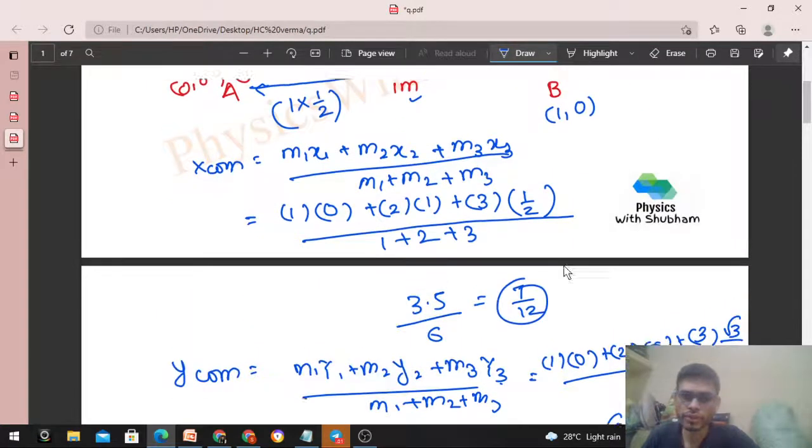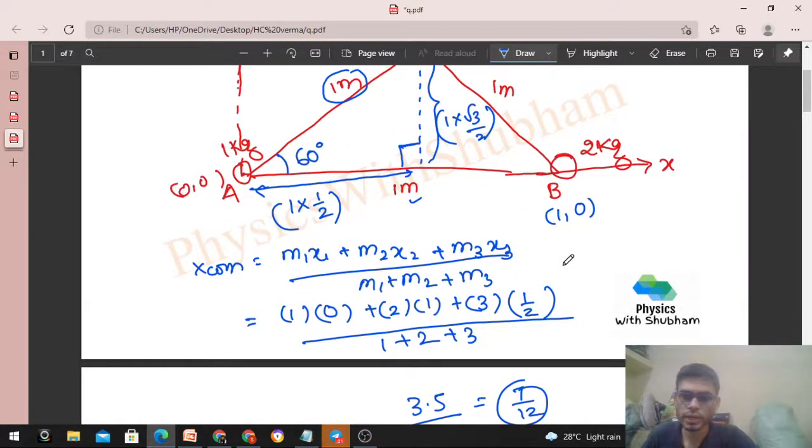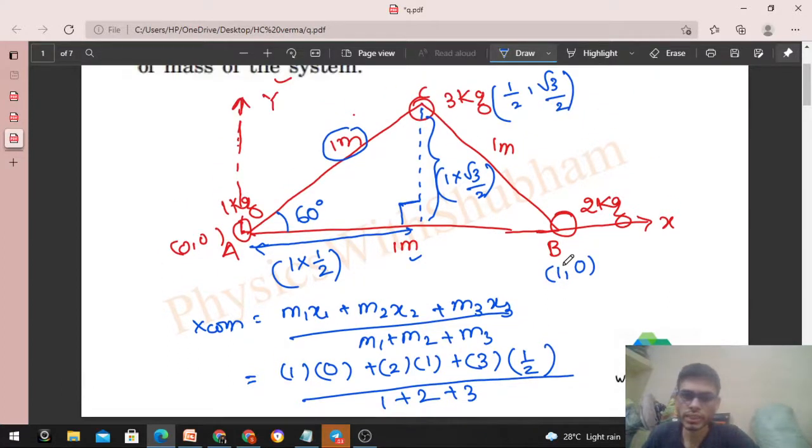So this will be 7/12. 7/12 means slightly more than 1/2, so somewhere here from the middle point. And for y-coordinate, somewhere here. So somewhere here is your center of mass. If they ask for distance, we can easily find out the distance between two points.